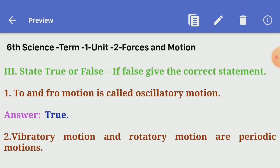Third roman, state true or false. If false, give the correct statement. First one: to and fro motion is called oscillatory motion. Answer: true.